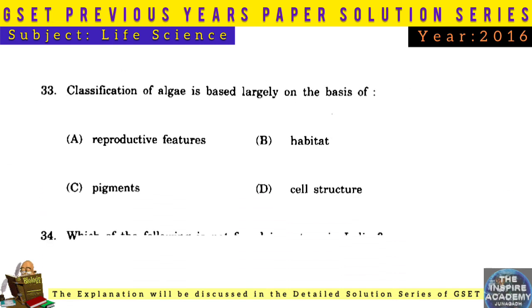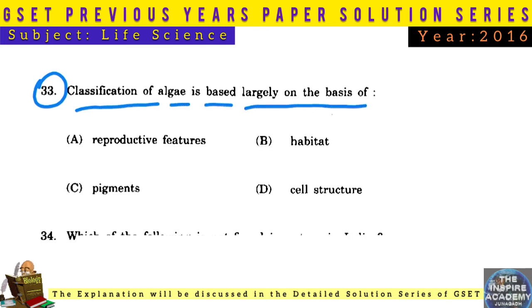Question No. 33: Classification of algae is based largely on pigments. On the basis of pigments, there are three types of algae.